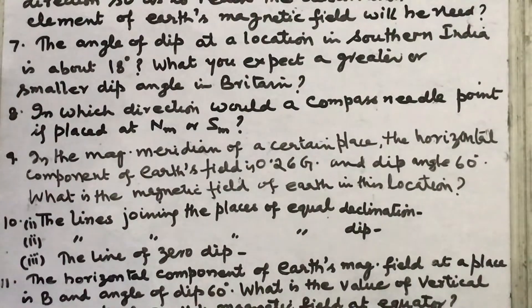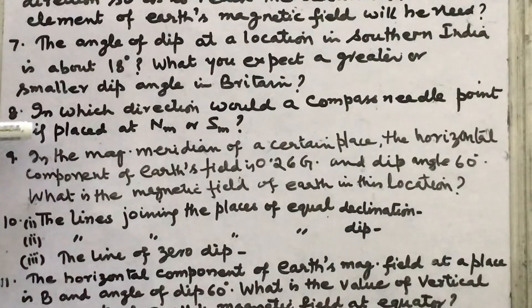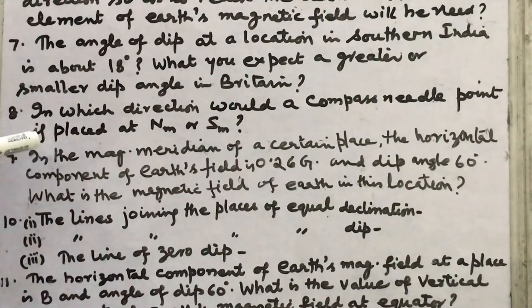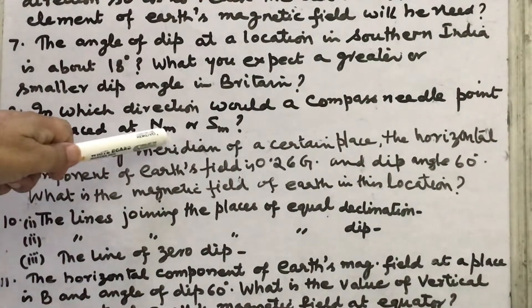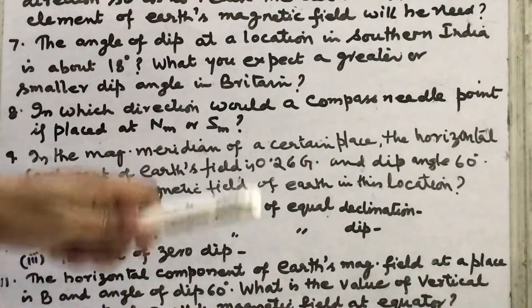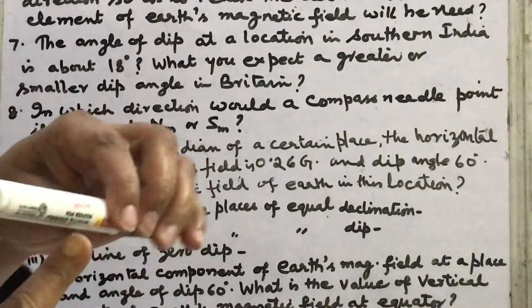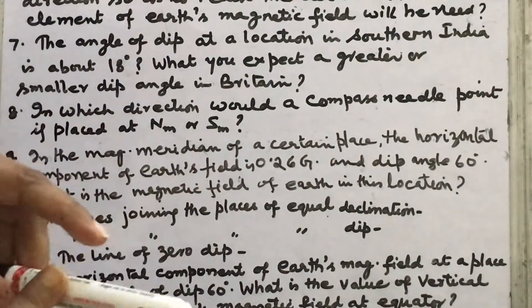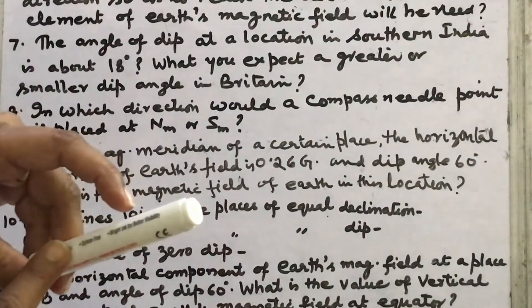Eighth question: in which direction would a compass needle point if placed at the magnetic north or south pole? A magnetic compass can rotate in the horizontal plane about a vertical axis. At the magnetic pole, it can point in any direction, so the answer is any direction.